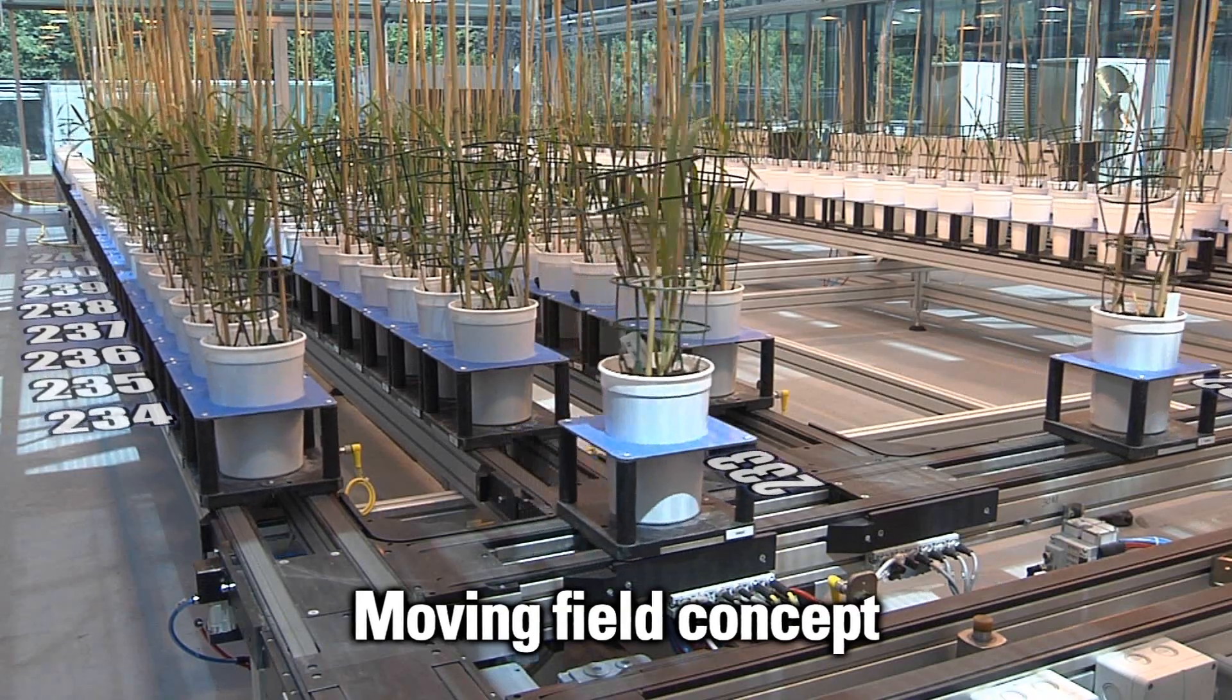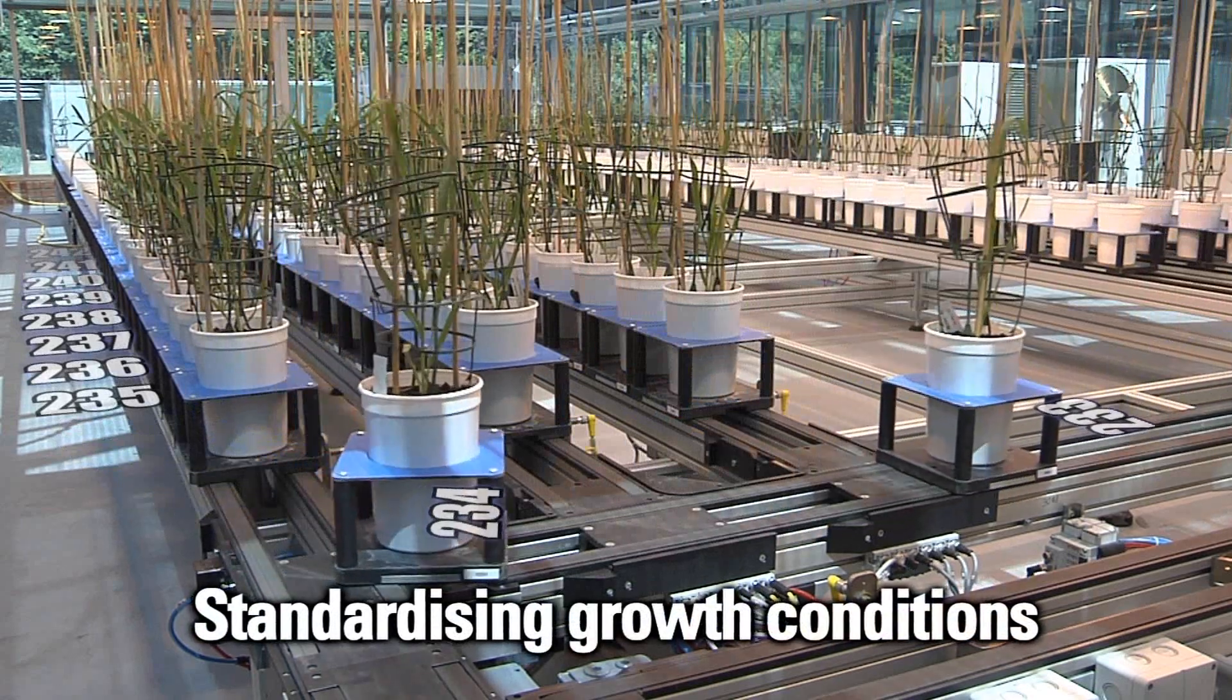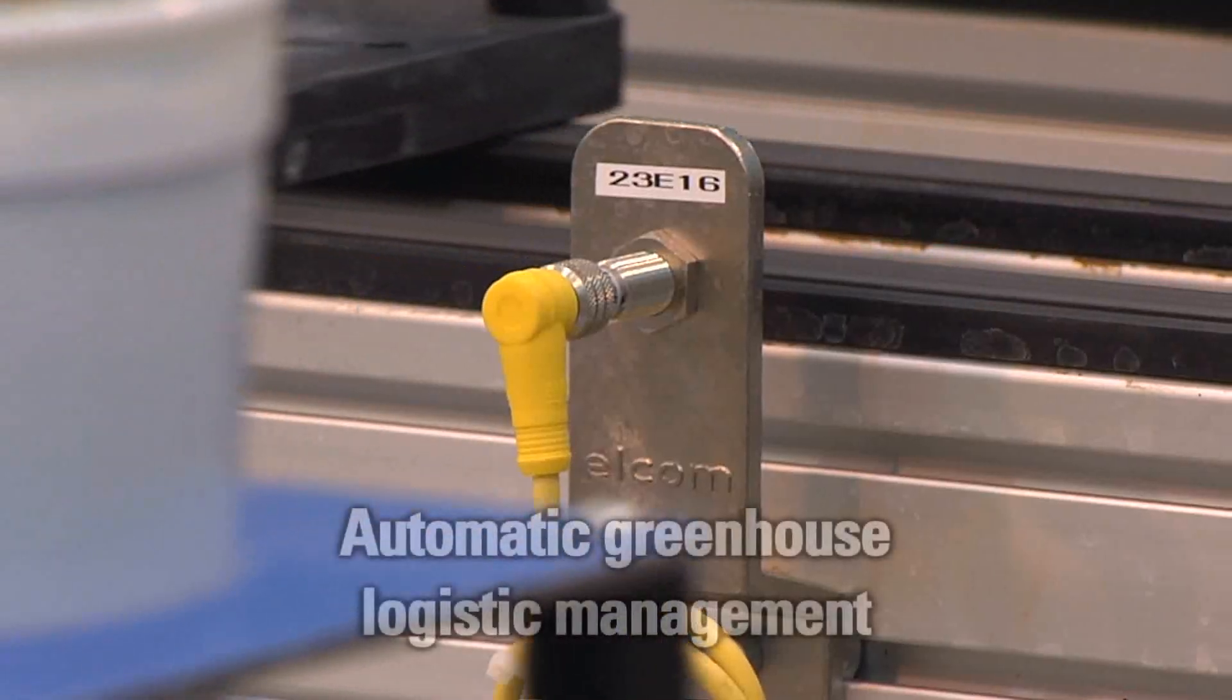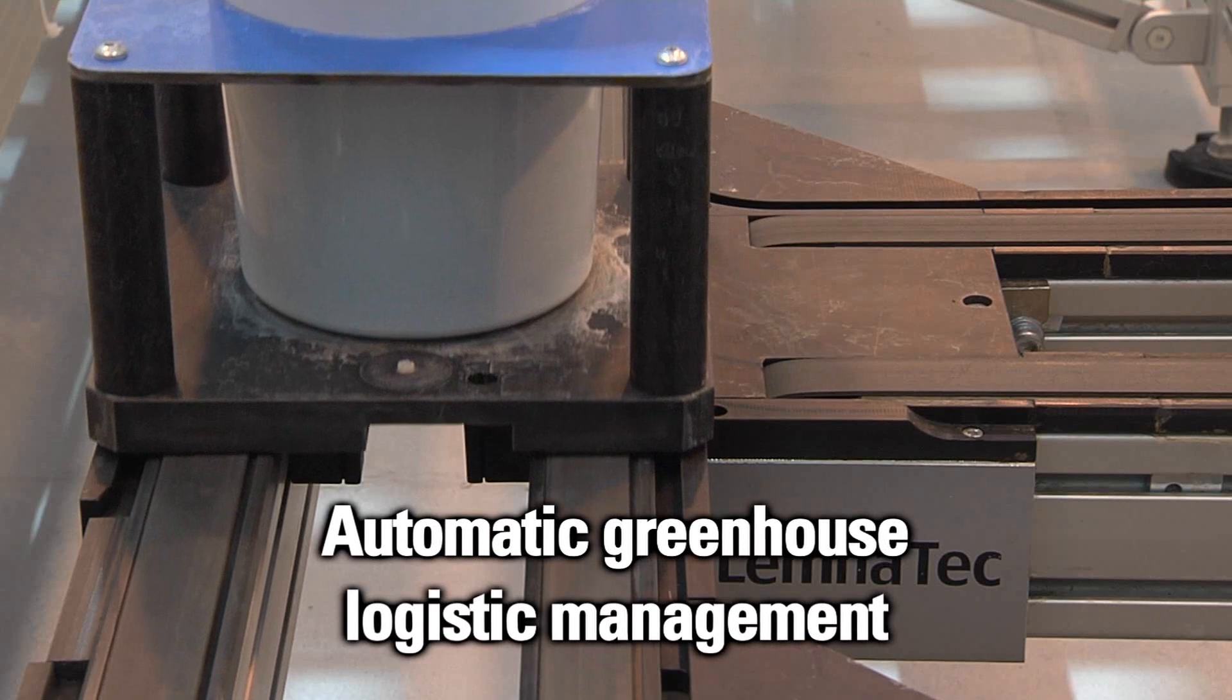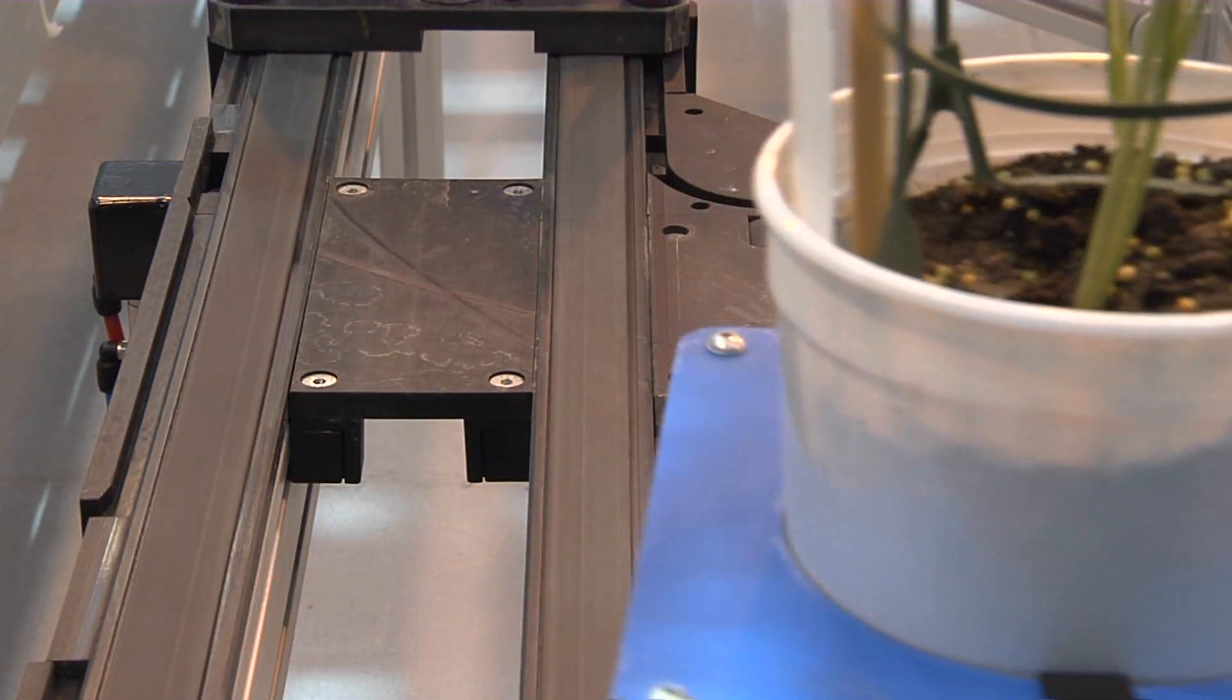Plants are phenotyped continuously with the so-called moving field concept, enhancing the statistical power of the greenhouse trials. Hotspots are eliminated and growth conditions are homogenized by continuously moving the plants through the whole greenhouse on predefined or random patterns.